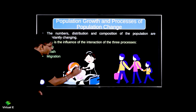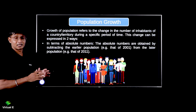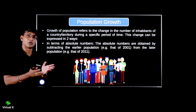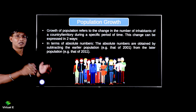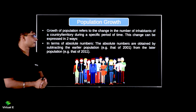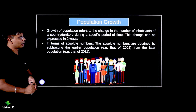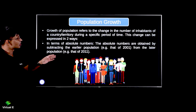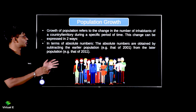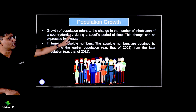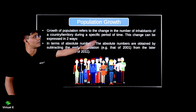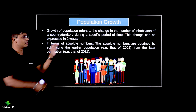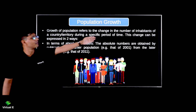During the pandemic, so many deaths occurred that death rates became almost equal to birth rates in some countries. Coming to our important part — population growth. Growth of population refers to change in number of inhabitants of a country or a territory during a specific period of time.